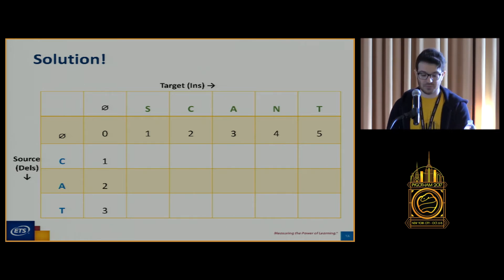We can then fill in what the cost of all of the insertions would be. This is the equivalent of saying the cost of going from empty string to empty string is zero. The cost of going from empty string to the letter S is one. From empty string to SC is two, and so on. Similarly, we do the same thing going down. We say that the cost of going from C to empty string is one. That's a single deletion. Going from CA to the empty string is two. That's two deletions to give us the cost of two, etc. for the word going down.